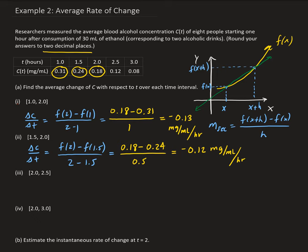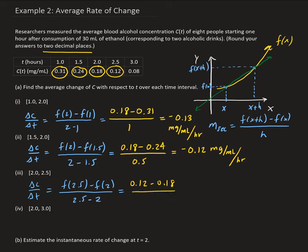For the next interval, we have delta C over delta T equal to f of 2.5 minus f of 2, divided by 2.5 minus 2. At 2.5 we have 0.12, and f of 2 is 0.18. Dividing by 0.5 gives us negative 0.12 milligrams per milliliter per hour.